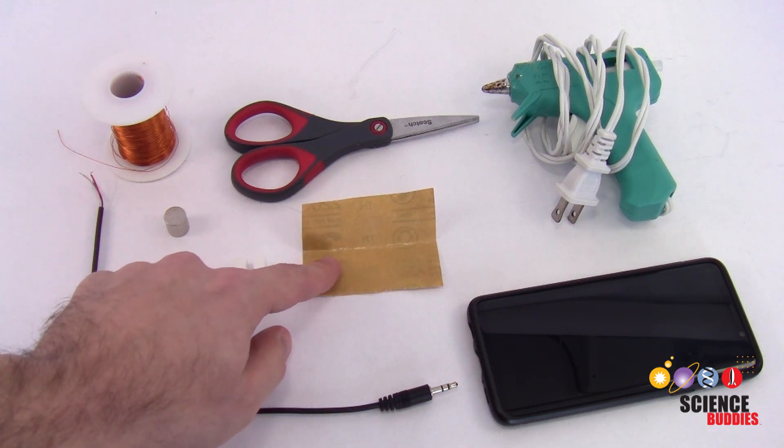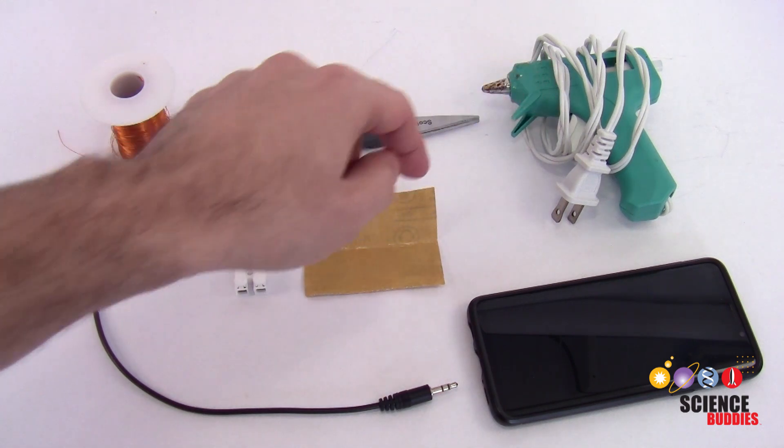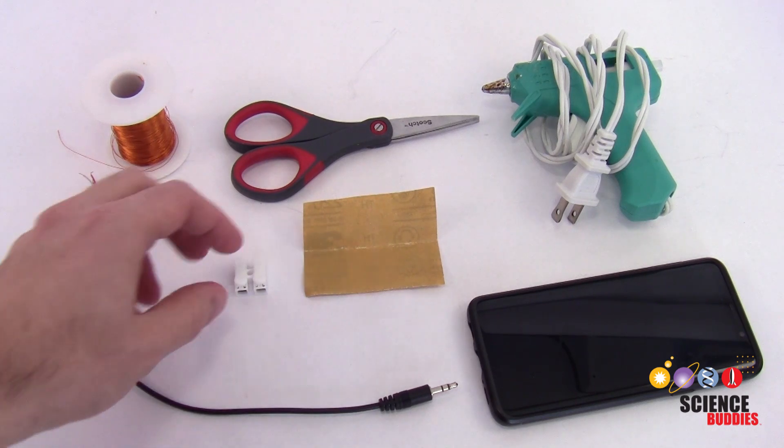You're also going to need some fine grit sandpaper, a pair of scissors, and a hot glue gun—or you could also use school glue or white glue, you'll just have to wait a little longer for things to dry.